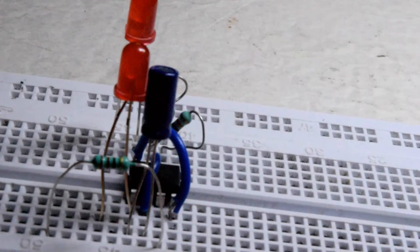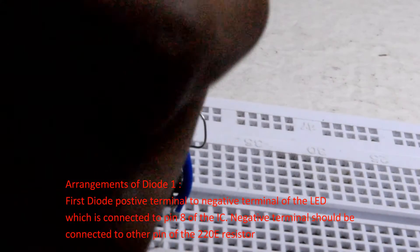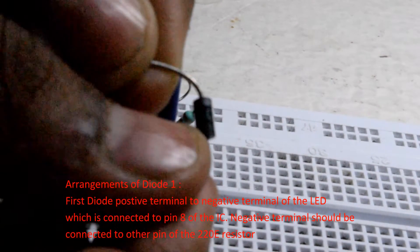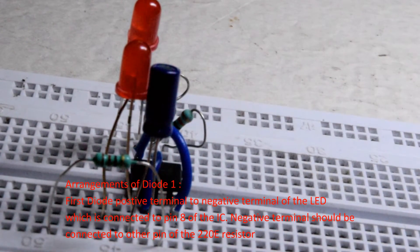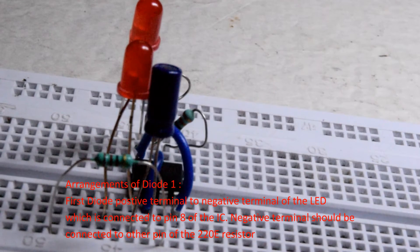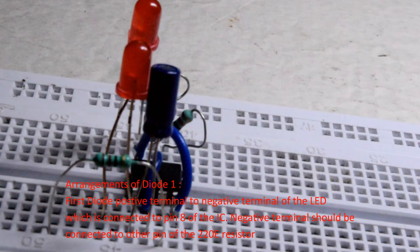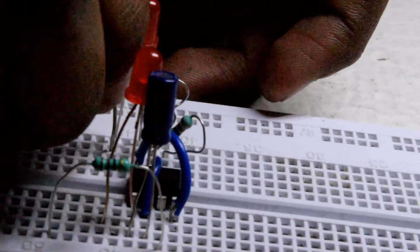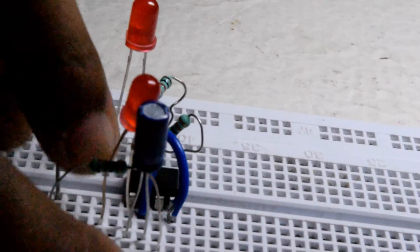Now take one of your diodes. Let me tell you that the grey side is the negative terminal and the non-grey side is the positive terminal. Connect the positive terminal to the negative terminal of the LED which is connected to pin 8, and the other pin should be connected to the other pin of the resistor that is connected to pin 3.